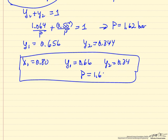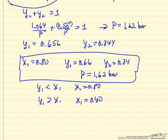Notice that y1 here is less than x1, whereas at x1 equals 0.8, and in the original set of data, at x1 of 0.4, y1 was greater than x1, which means we must have an azeotrope in this system.